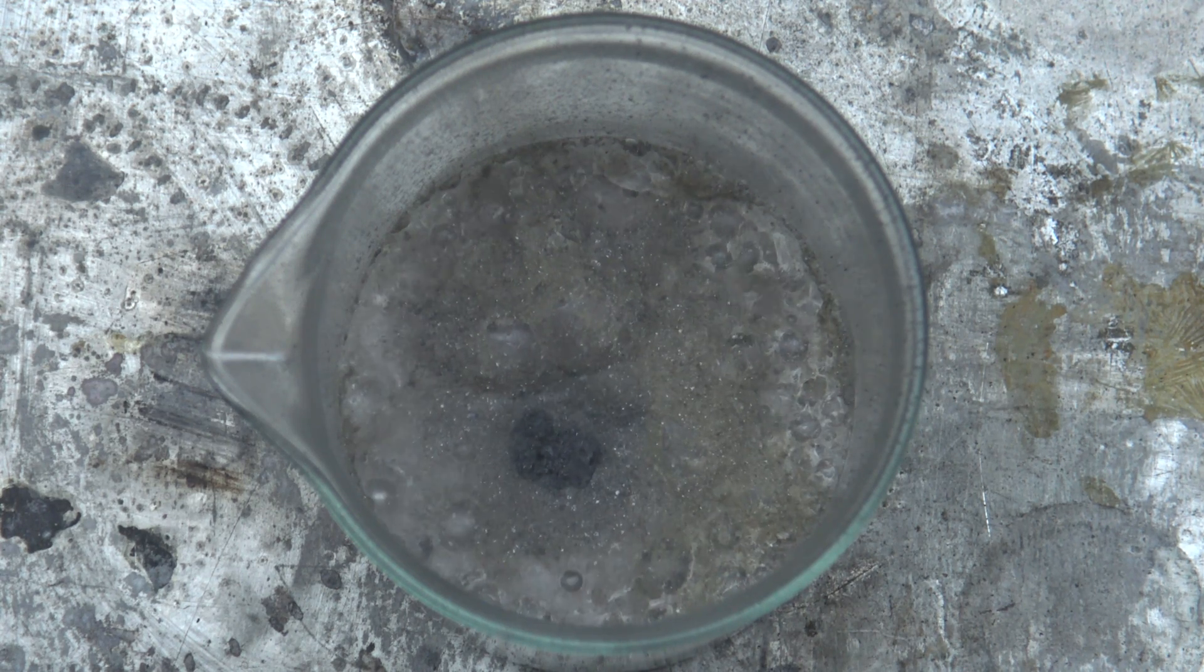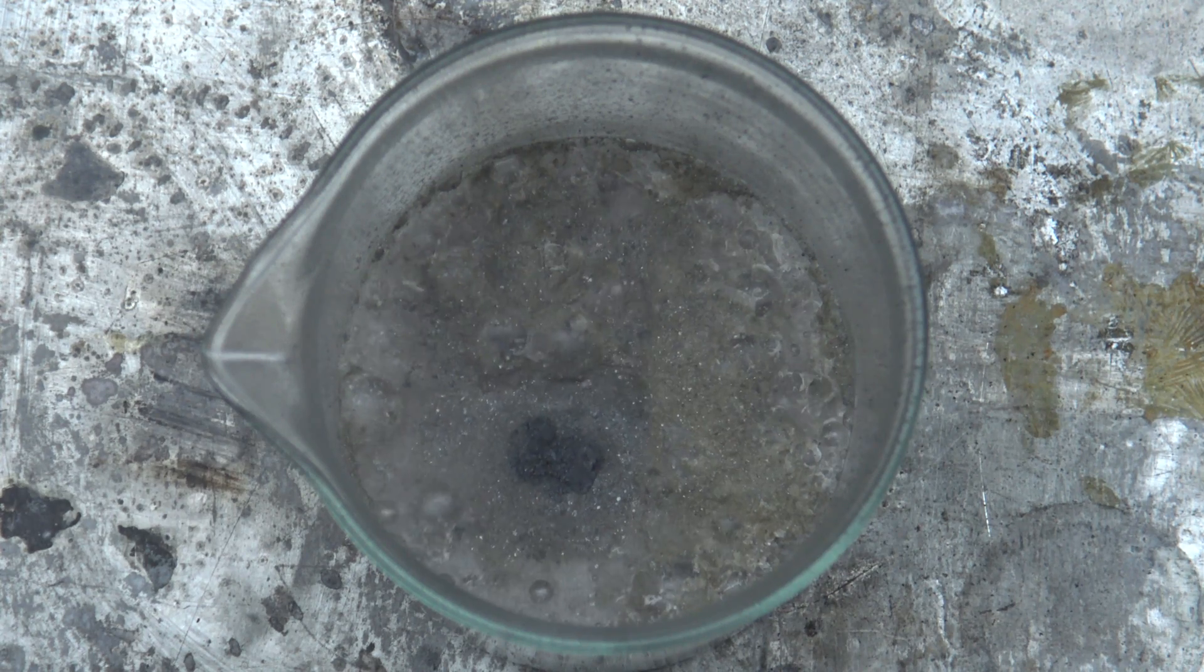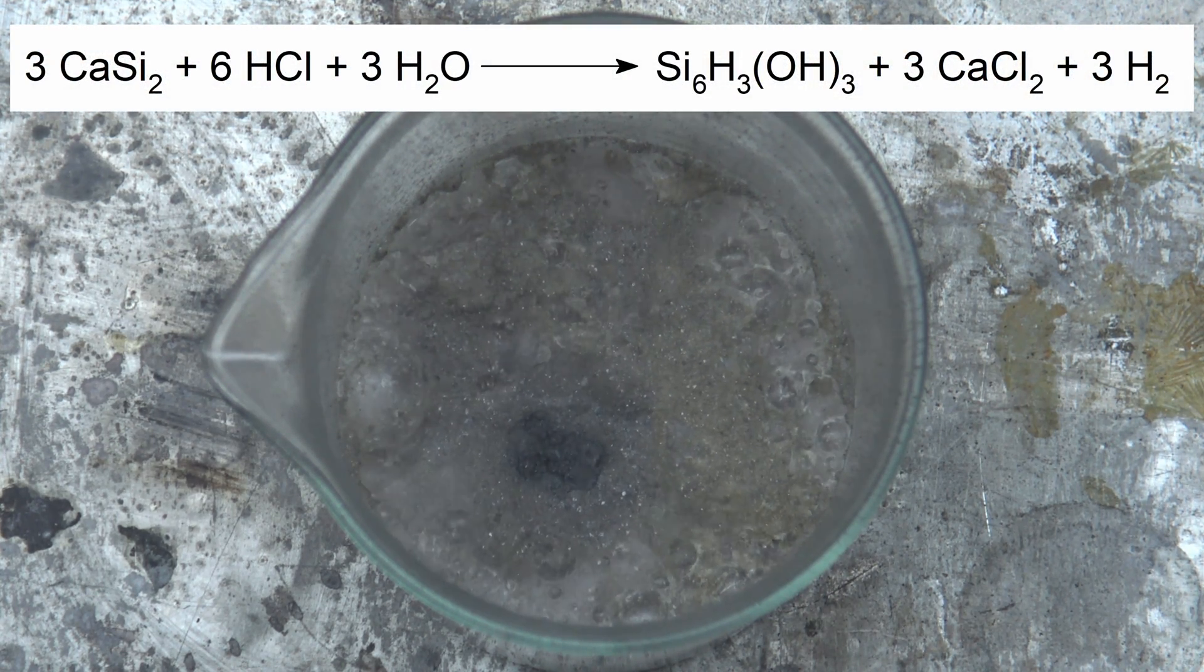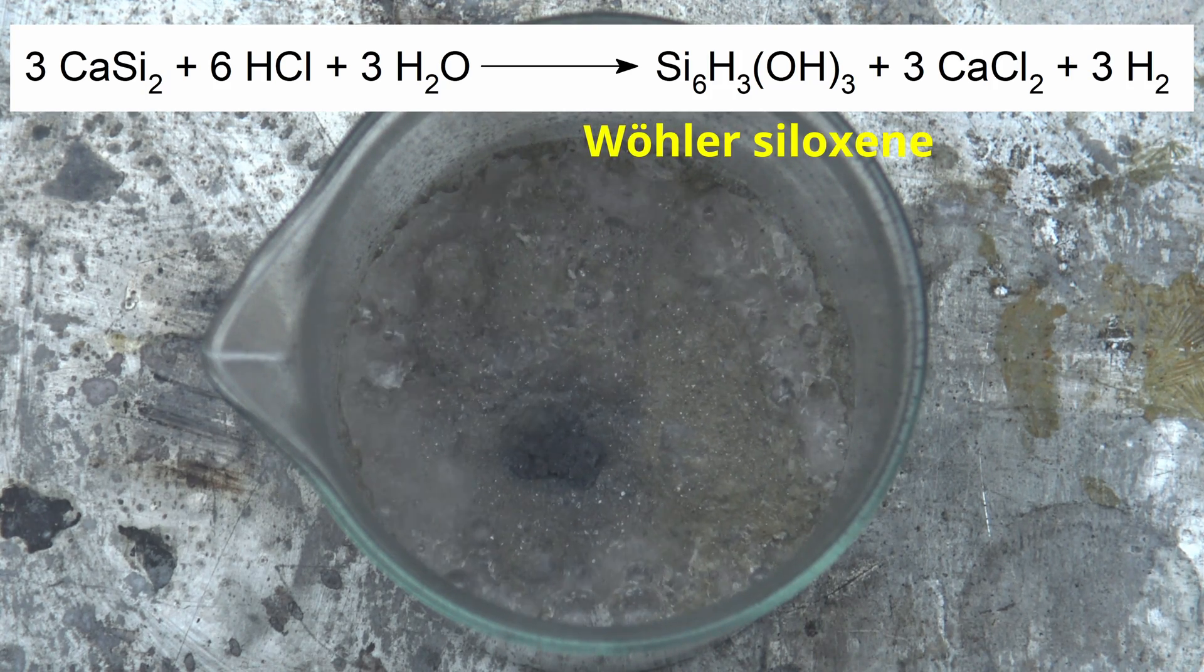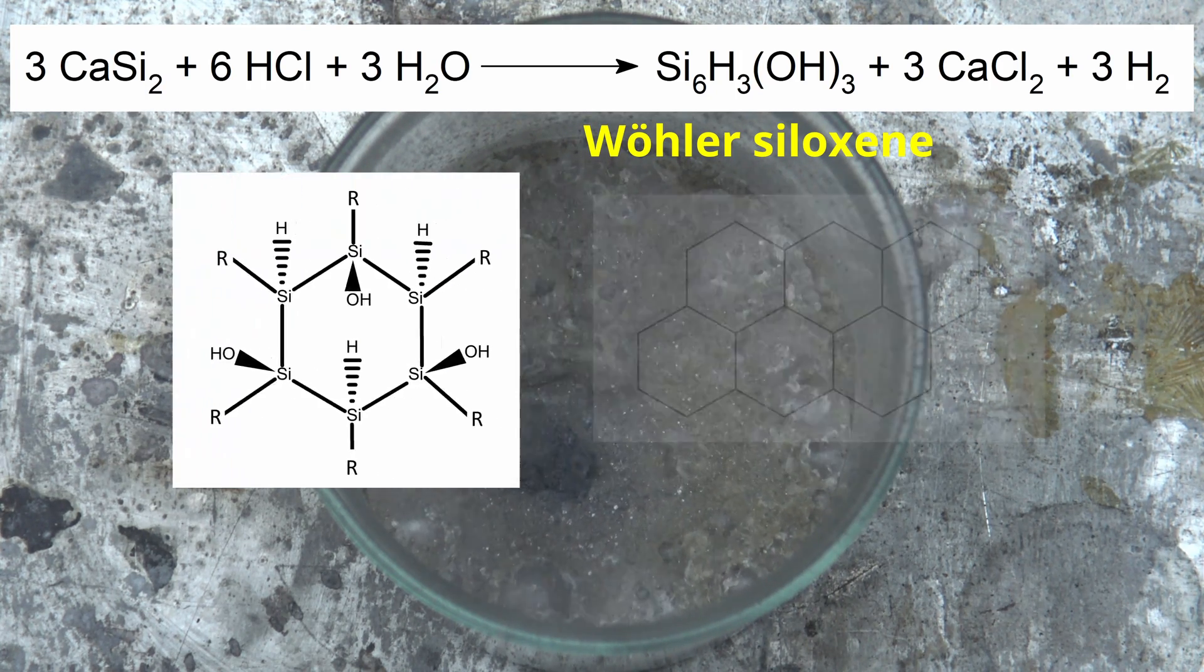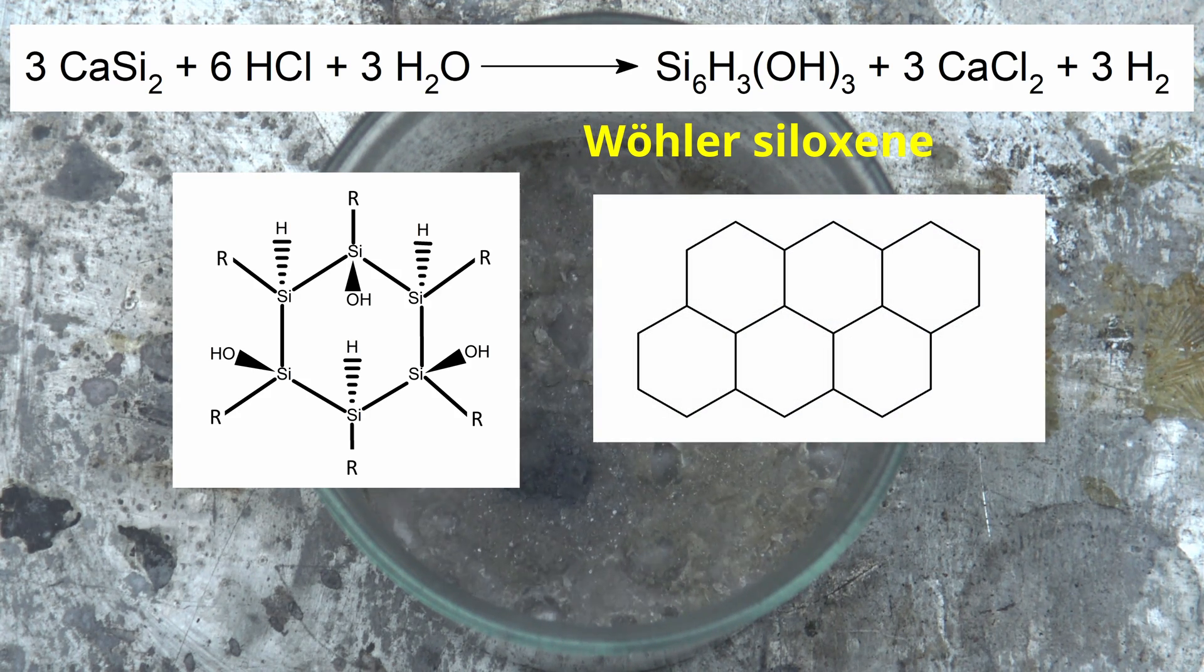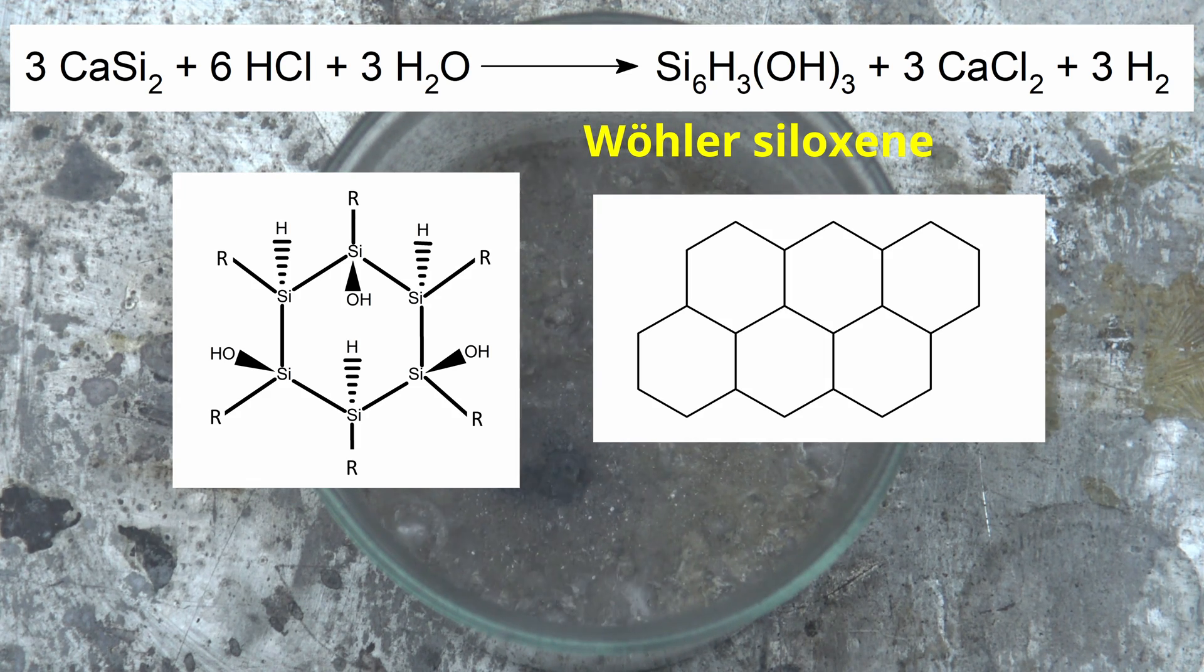The mixture was left to sit for 35 minutes and stirred occasionally. In this time, the calcium disilicide reacts slowly with the acid to form Wöhler siloxene. It's a compound with a hexagonal structure. This forms layers of silicon atoms, to which hydrogen and hydroxyl groups are attached. These layers are stacked on each other and are connected by dipolar interactions due to the attached groups.